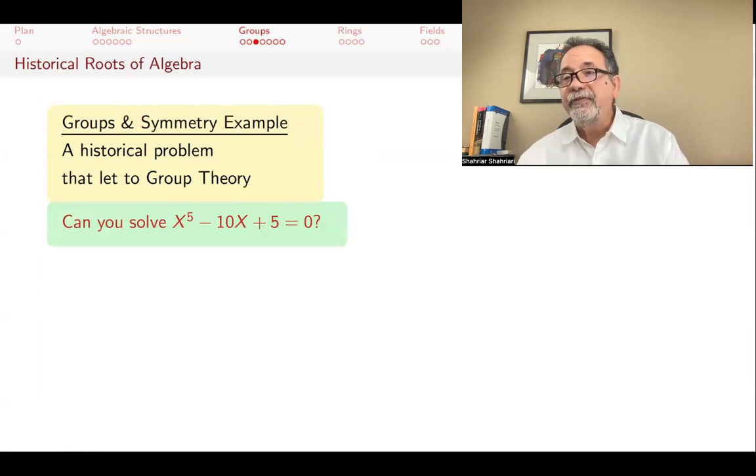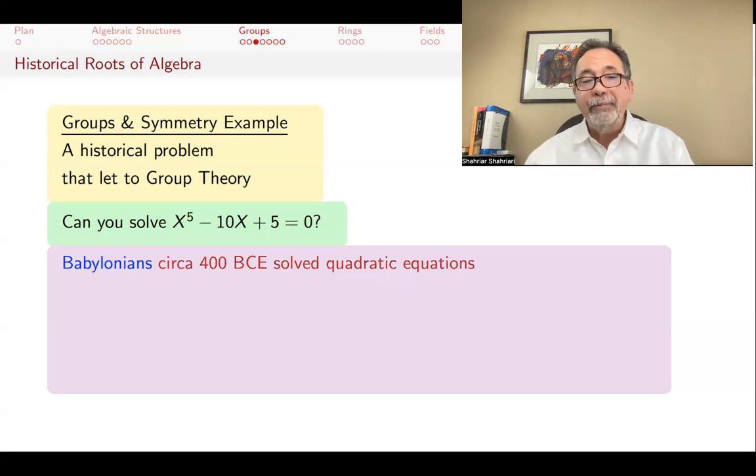I also give you a historical problem that led to the advent of group theory. Can we solve x to the fifth minus 10x plus 5 equals 0? Meaning, can you find a number x that satisfies this equation? If this was not a fifth degree equation, if it was not a quintic, but it was a quadratic, then you know from high school the quadratic formula.